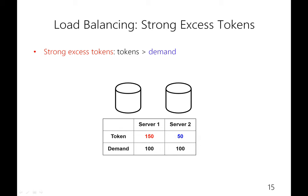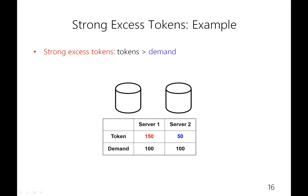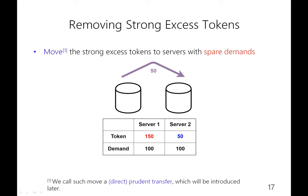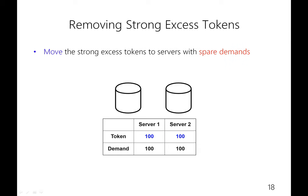To illustrate the idea of load balancing using only one client, there will be two scenarios where tokens won't be consumed at runtime. The first scenario is when tokens allocated exceed the corresponding demand — we call these strong excess tokens. In this example, there are two servers, both with demands of 100 IOPS for the client, and the token allocation is 150 and 50. On server 1, the number of tokens is 50 more than the corresponding demand, resulting in 50 strong excess tokens. To get rid of strong excess tokens, they must be moved to servers with spare demands — in this case, server 2. The resulting allocation then has no strong excess tokens left.